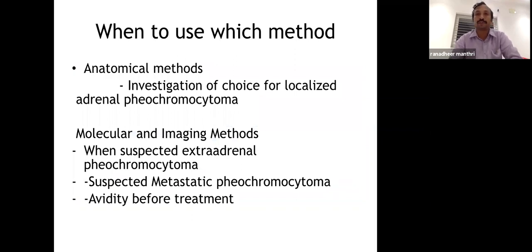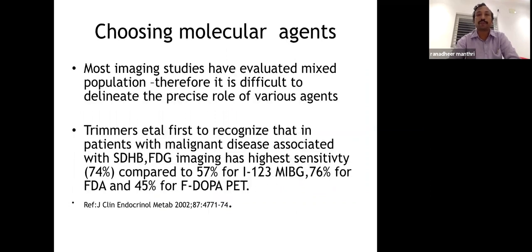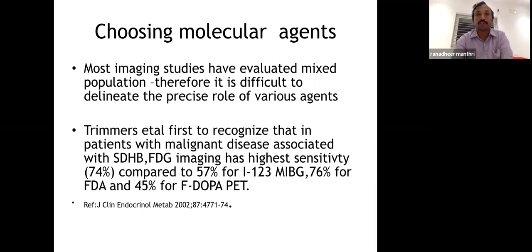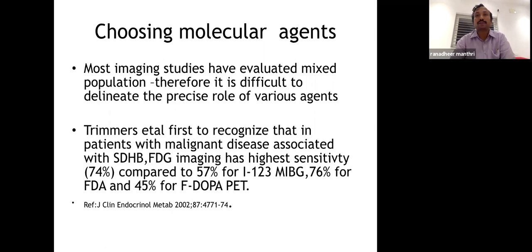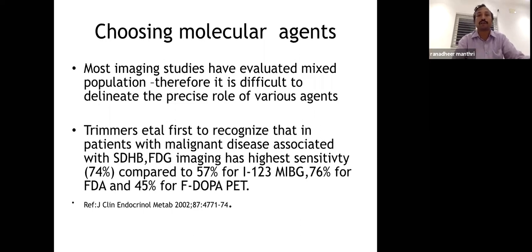When to use which imaging method: anatomical methods are the investigation of choice for localized adrenal pheochromocytoma. Molecular imaging is used when you suspect extra-adrenal or metastatic pheochromocytoma, or to assess avidity before treatment. Imaging choice depends on the mutation. In patients with malignant disease associated with SDHB (succinate dehydrogenase, part of the Krebs cycle), FDG is better because the tumor relies on substrate-level phosphorylation in the cytoplasm rather than mitochondria.